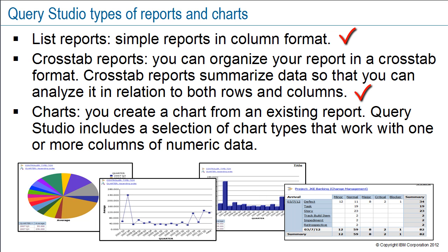You can create a crosstab report, rotate rows and columns, insert a column into a crosstab, create sections, and apply templates. Third, charts can be created from an existing report. Query Studio includes a selection of chart types that work with one or more columns of numeric data. You can view charts with or without the report information. You can create a column chart, hide the menu, create a pie chart, and move columns around. In the graphics, you can see examples of Query Studio reports and charts.